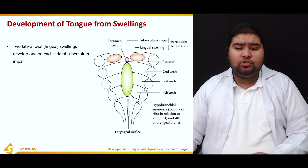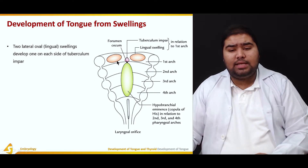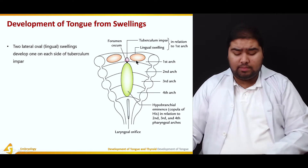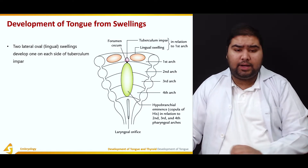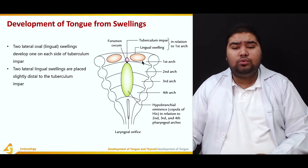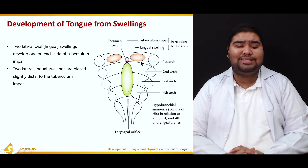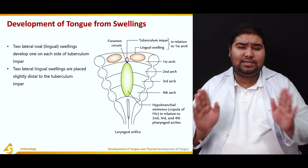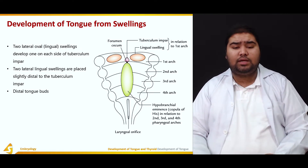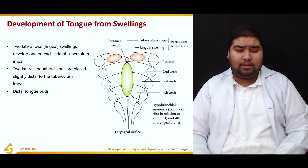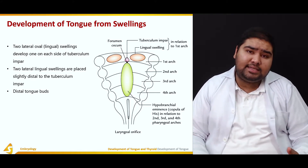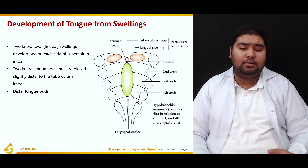The two lateral lingual swellings, shown here in orange, also appear on each side of the tuberculum impar. They are placed slightly distally, present distally to the sides of the tuberculum impar, and are hence known as the distal tongue buds.